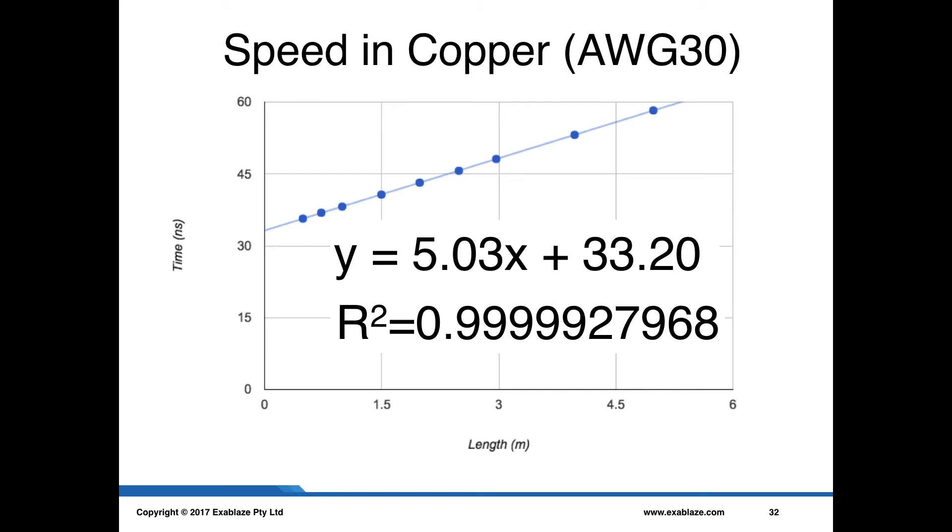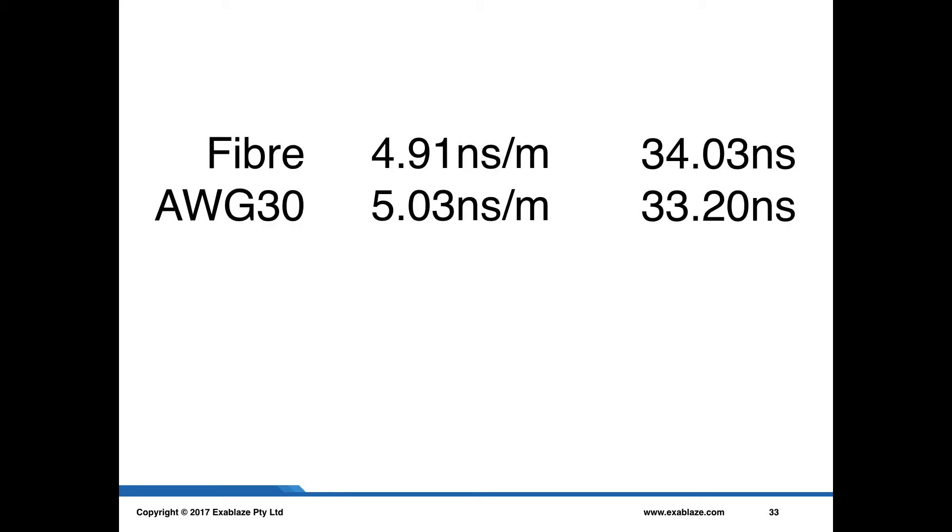We run the same experiment and plot the same curve. We can do a linear fit and look at the quality of that fit and the quality of the fit is very good. If we extract those values and summarize them, you can see the gradients and the intercepts are split out. Fiber has a propagation delay of 4.91 nanoseconds per meter and the copper has a delay of 5.03 nanoseconds per meter.